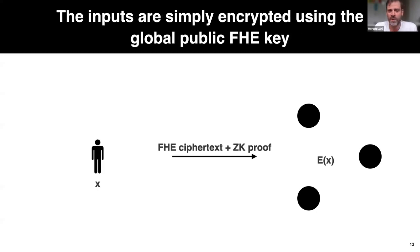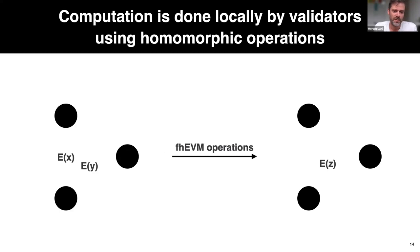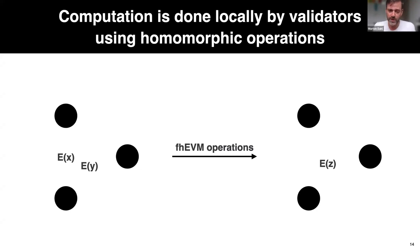When the smart contract wants to compute on the values in state, it calls into our FHEVM, which calls into our homomorphic library. So taking an encryption of X and encryption of Y, the validators can individually use our encryption scheme to arrive at an encryption of Z — the result of the homomorphic operation.